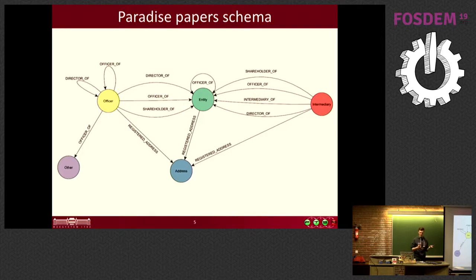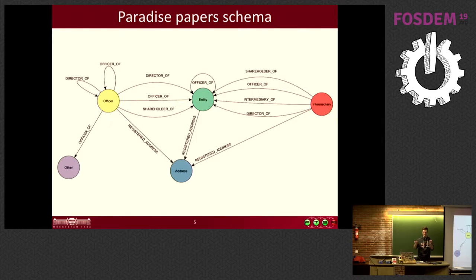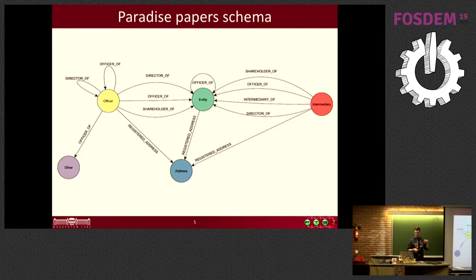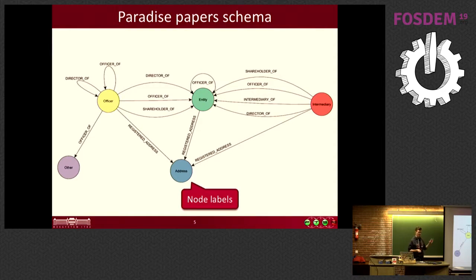The schema of the graph is rather simple. You have entities connected to officers, they have intermediaries to do their business deals with, and many of these objects can be registered to a certain address. This is a graph schema with node labels and edge types that you have probably seen something similar to.